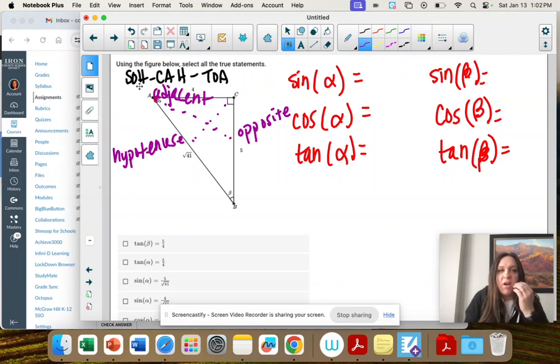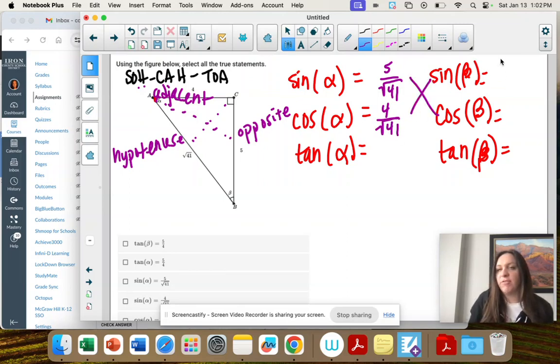Sine is opposite over hypotenuse, so 5 over square root of 41. Cosine is adjacent over hypotenuse. Remember those switch spots when you change the reference angle. So that's 4 over square root of 41 and 5 over square root of 41.